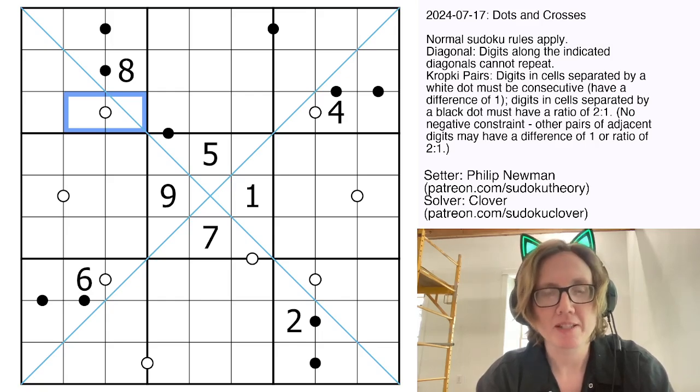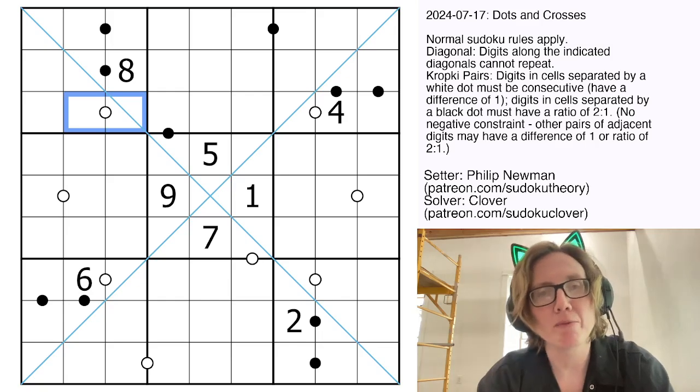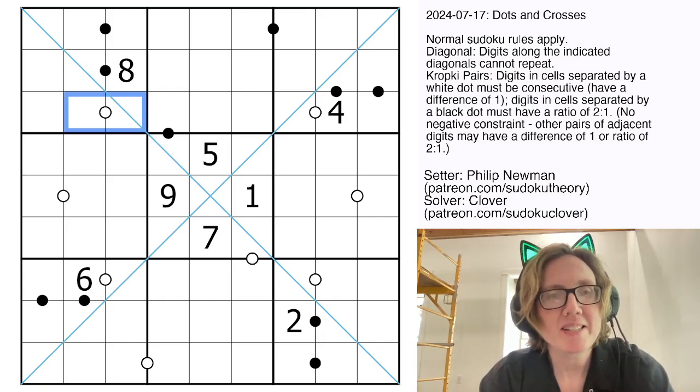Not all possible dots have necessarily been given, so there might be other pairs of digits in the grid that are in a 1 to 2 ratio or that have a difference of 1 that don't actually have a dot marking them. So let's get started.